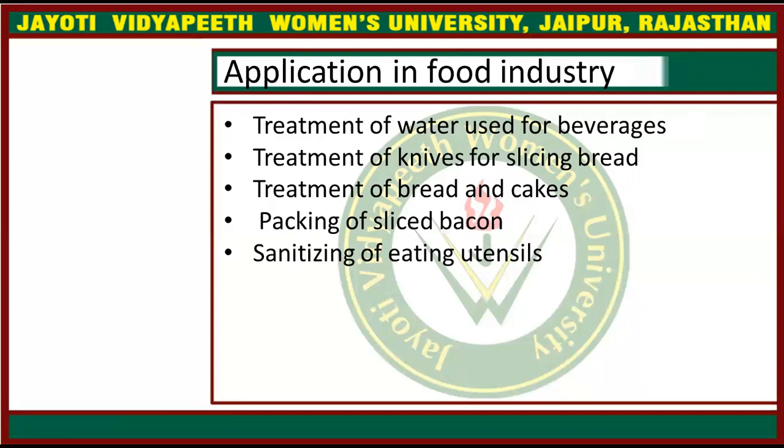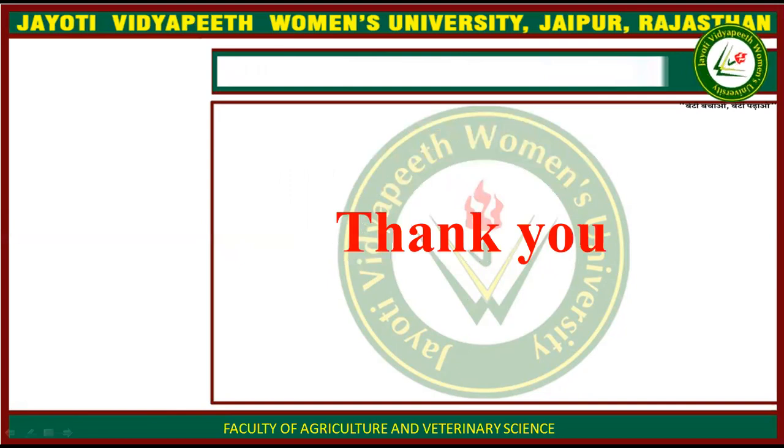If you look at the household level, microwave ovens are the most common examples of radiation. At the industrial level, there are many types of rays used, including ionizing rays, UV rays, and infrared rays. The most common at the household level are microwaves and ovens, where rays preserve your food. This is all about the radiation method of preservation. In case of any doubt, you may ask in the comment section. Thank you.